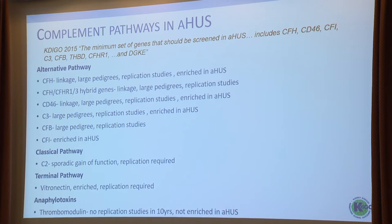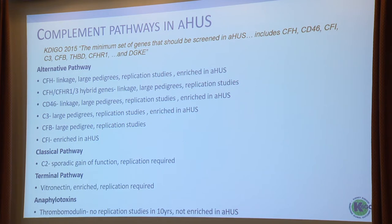Thrombomodulin — I'm going to be controversial here and say that not everything you read in the New England Journal may be correct. Ten years ago in 2015, we said the minimum set of genes to screen in HUS includes Factor H, CD46, Factor I, C3, Factor B, and thrombomodulin. In the ten years since, nobody has shown enrichment for thrombomodulin and there are no replication studies. Should we still screen it, or should we quietly let that slip off the guidelines?